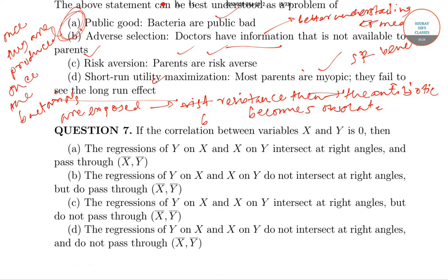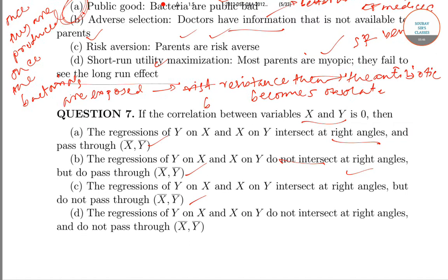Moving to question number 7. If the correlation between X and Y is 0, then the regression line Y on X and X on Y intersect at right angle and pass through X bar Y bar, do not intersect at right angle but do pass through X bar Y bar, intersect at the right angle but do not pass through X bar Y bar, and do not intersect at the right angle and do not pass through X bar Y bar.